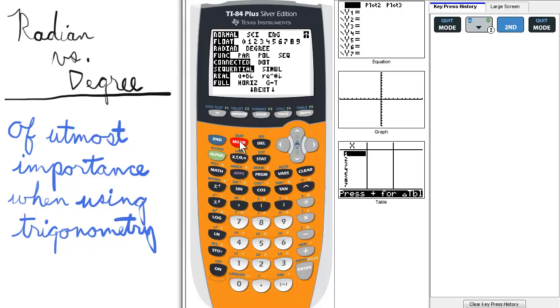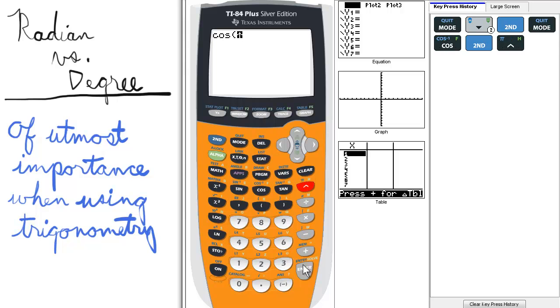So we'll quit, go to the home screen, and see what happens when we calculate the cosine of pi. The cosine of pi is negative 1.